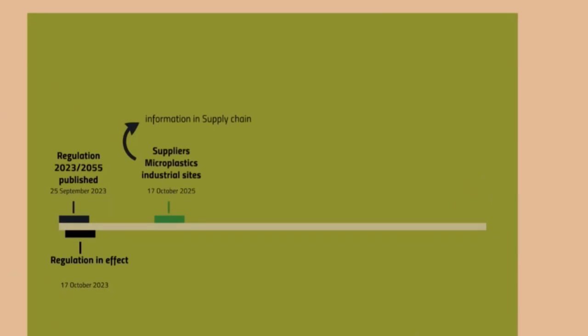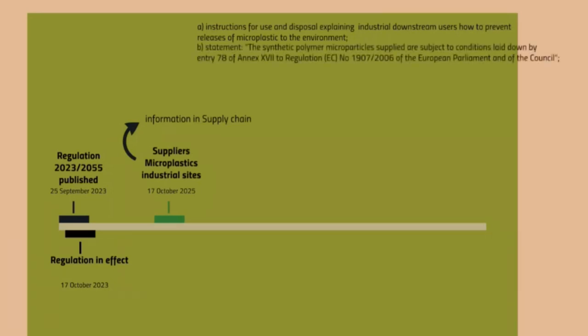Suppliers that supply microplastics to industrial sites — as of October 17th of 2025 — will have to distribute information in the supply chain. This information will include instructions for use and disposal, explaining to their industrial downstream users how to prevent the release of microplastics. They will also need to make a statement that a synthetic polymer microparticle supplied is subject to the conditions laid down by entry 78 of Annex 17 to the regulation.